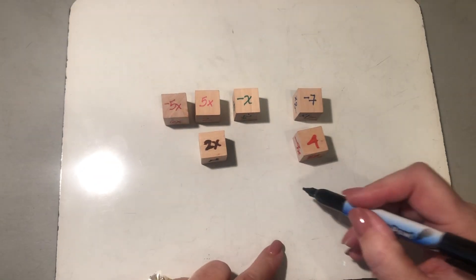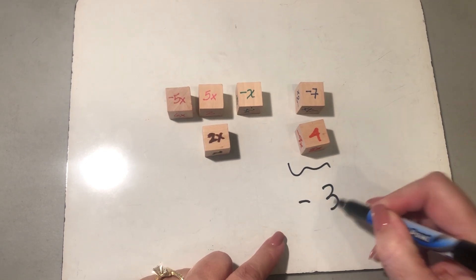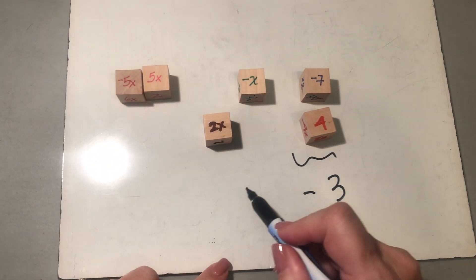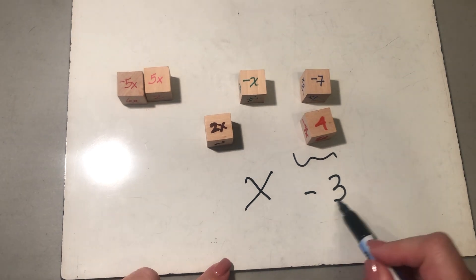Okay, and what that's going to give us, there's negative 3. These are a zero pair. Here this is going to give me x. So we have x minus 3.